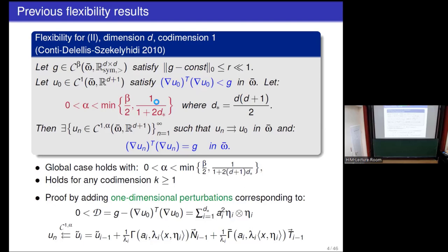There is a caveat: G must be close to a constant (e.g., identity) for this exponent to hold. In the global case without this assumption, the exponent lowers. Also, this result holds for any co-dimension, not just co-dimension one, with the same exponent.